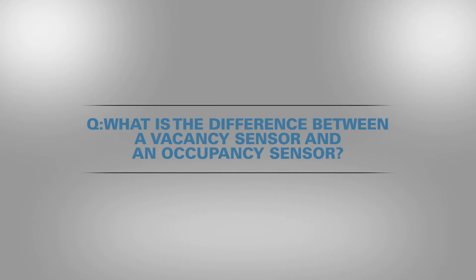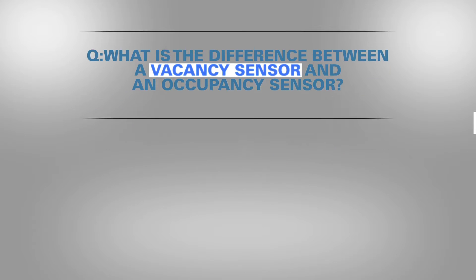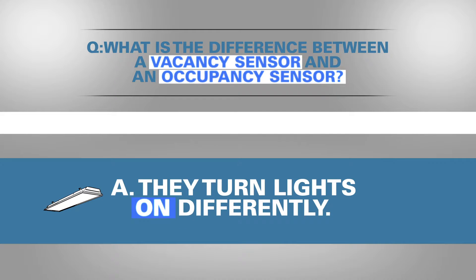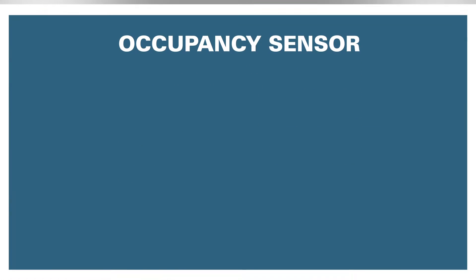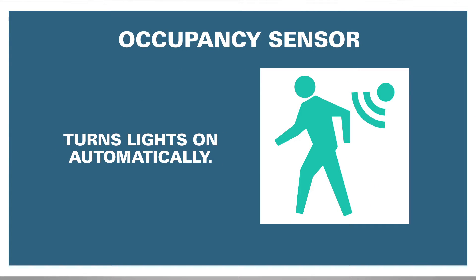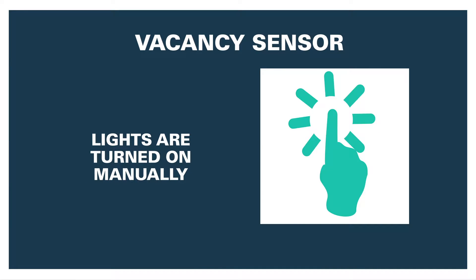Do you know the difference between a vacancy sensor and an occupancy sensor? They turn the lights on differently. An occupancy sensor turns lights on automatically whenever someone enters the room. With a vacancy sensor, lights must be turned on manually by a person in the space.